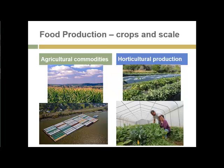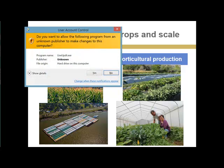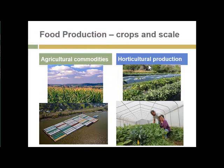The big picture of food production in the United States and increasingly around the world is the contrast between production of agricultural commodities such as corn, beans, soybeans, and some horticultural crops — you might throw potatoes and other vegetable crops into that mix. The contrast is with horticultural production, which is a much smaller scale, generally high-value products with probably more diversity of crops on a given area of land.